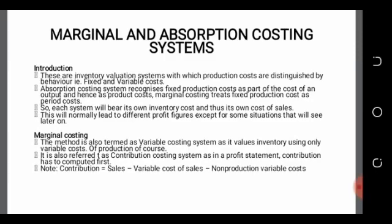Hello everyone, welcome again to this course. Today we will focus on marginal and absorption costing systems. These are inventory valuation systems in that we look at the cost components used to form the cost of a product. The marginal costing system involves only variable cost components of a product, while the absorption costing system involves both variable and fixed cost components of a product.